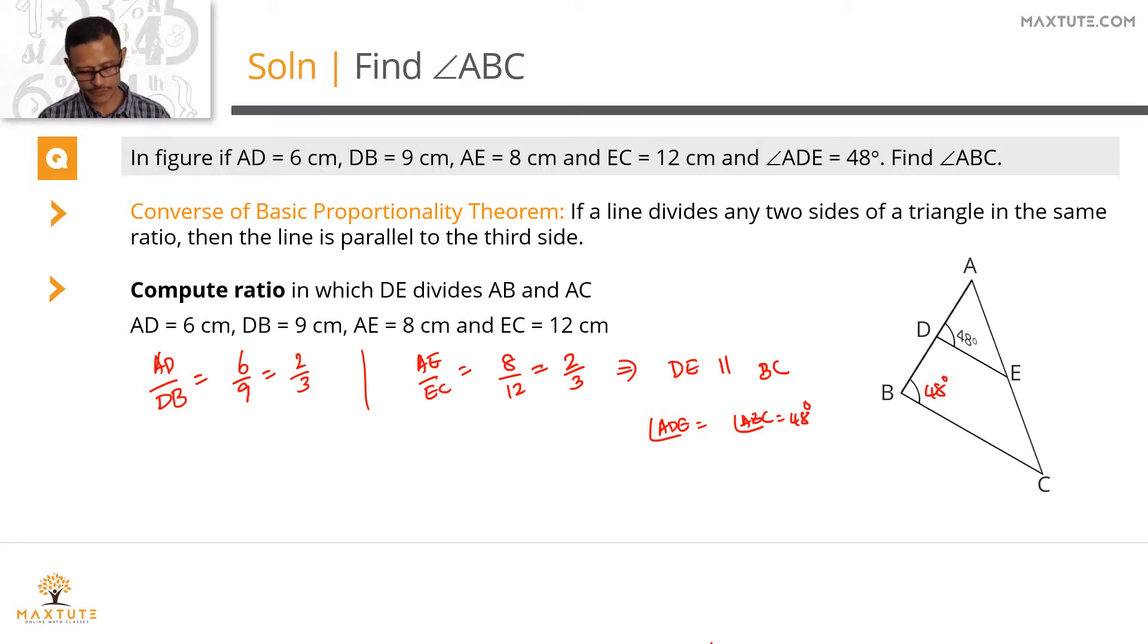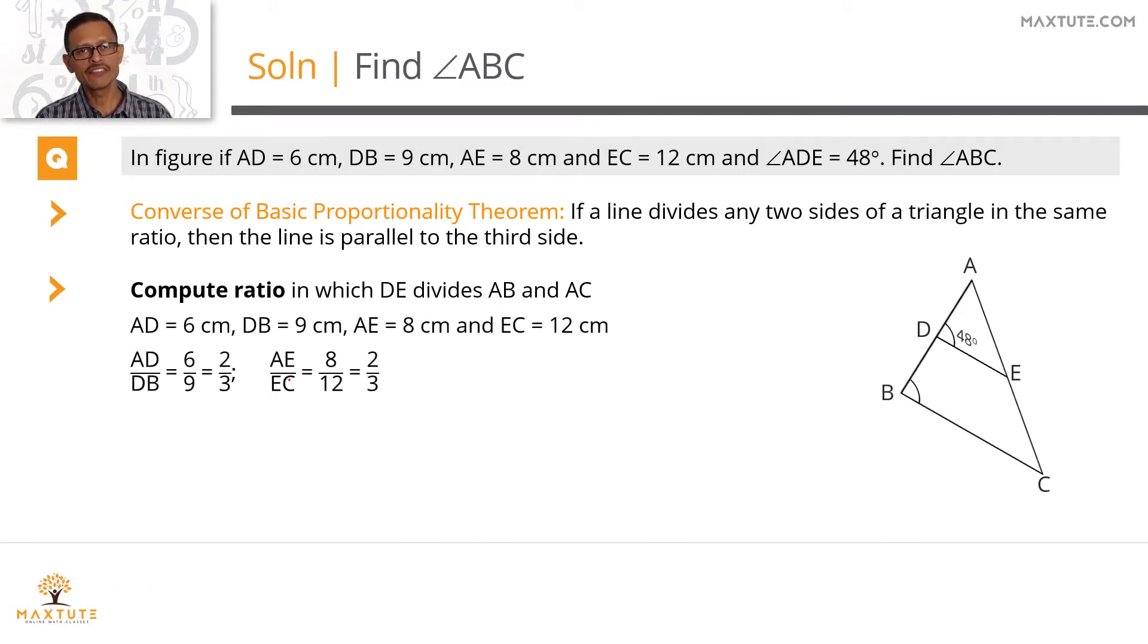Quickly summarize it in a printed form. We are computing the ratio in which DE divides AB and AC. It divides it in the ratio of 2 by 3 and 2 by 3. Because this ratio is the same, we can conclude that DE is parallel to BC. If DE is parallel to BC, angle ADE will be equal to angle ABC which is equal to 48 degrees.